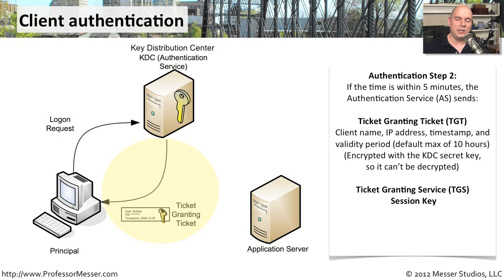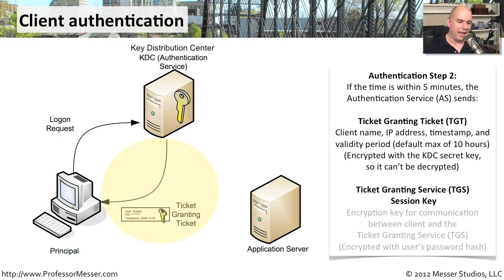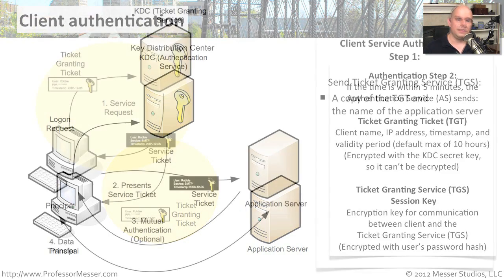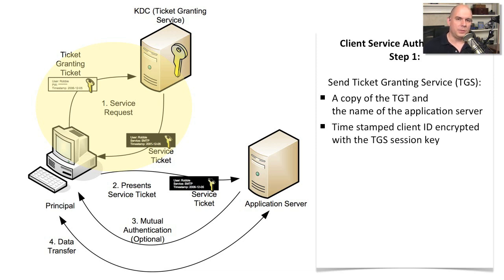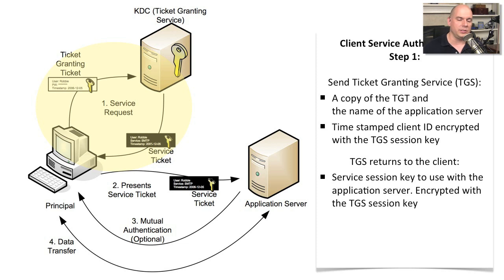You're also going to receive a session key — this is the ticket granting service session key, which is a key you're going to use for encryption between the ticket granting service and the user. It's encrypted with your password hash, so you will be able to decrypt that piece of it. Now that you have a ticket that allows you to get access to resources, you'll send that ticket and the name of the application server or resource you'd like to access up to the ticket granting service. This request is timestamped with the client ID and encrypted with the TGS session key. You're going to get a response back that has a session key you're going to use with that application server, encrypted with the ticket granting service's session key.